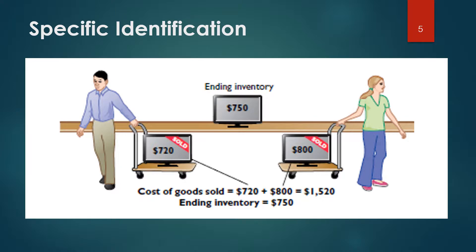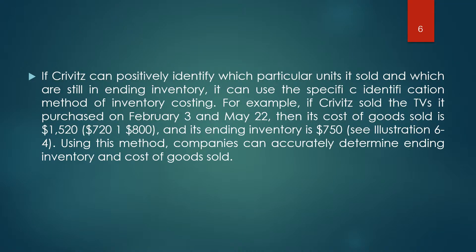Specific identification: if Krivet's can positively identify which particular units it sold and which are still in ending inventory, it can use the specific identification method of inventory costing. For example, if Krivet's sold the TVs purchased on February 3rd and May 22nd, then its cost of goods sold is $1,520 ($720 + $800), and its ending inventory is $750. Using this method, companies can accurately determine ending inventory and cost of goods sold.